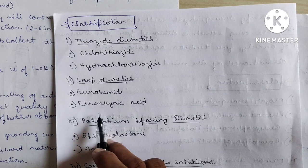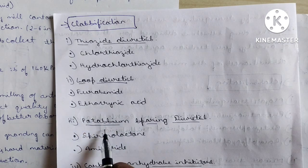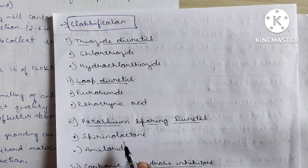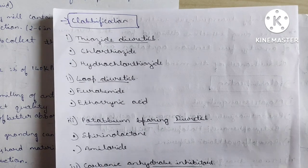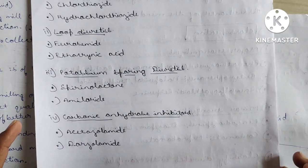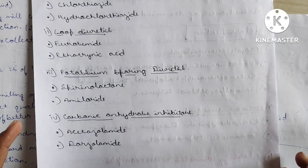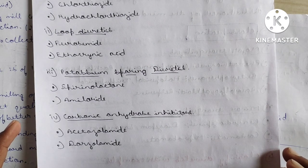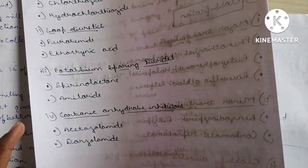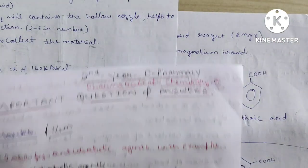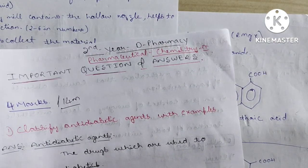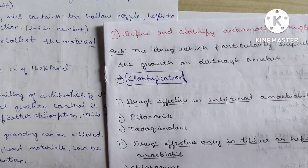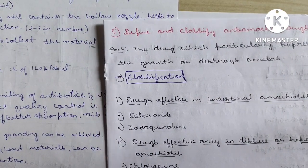Potassium-sparing diuretics — spironolactone and amiloride. Carbonic anhydrase inhibitors — acetazolamide and dorzolamide. These are the classifications of diuretics.